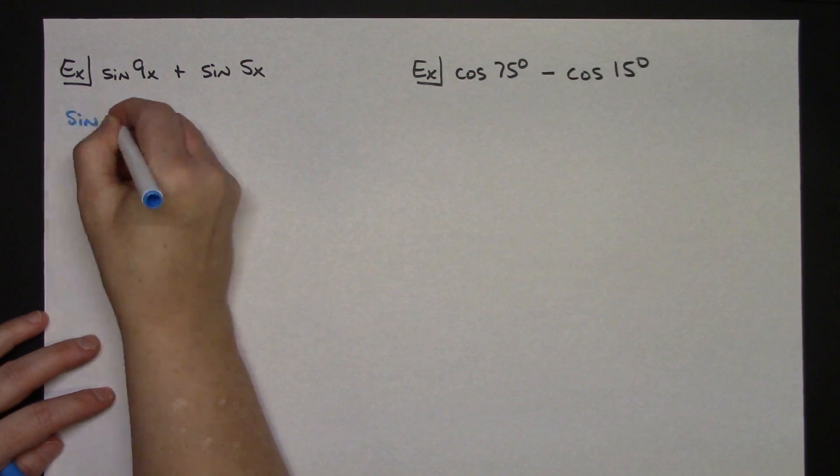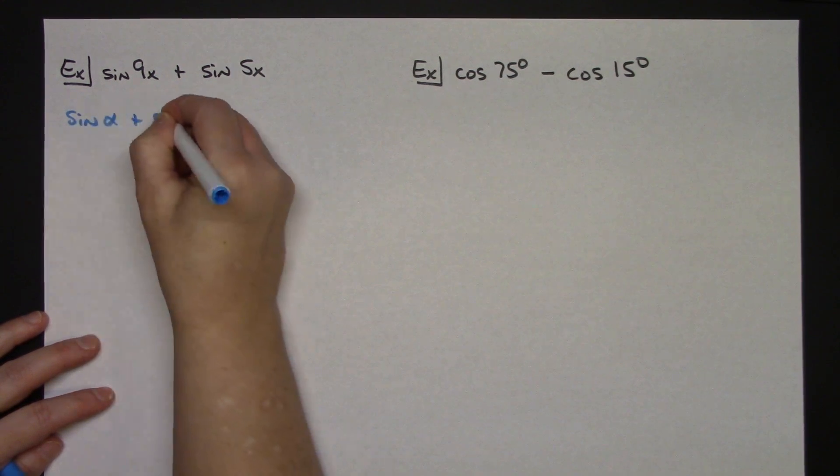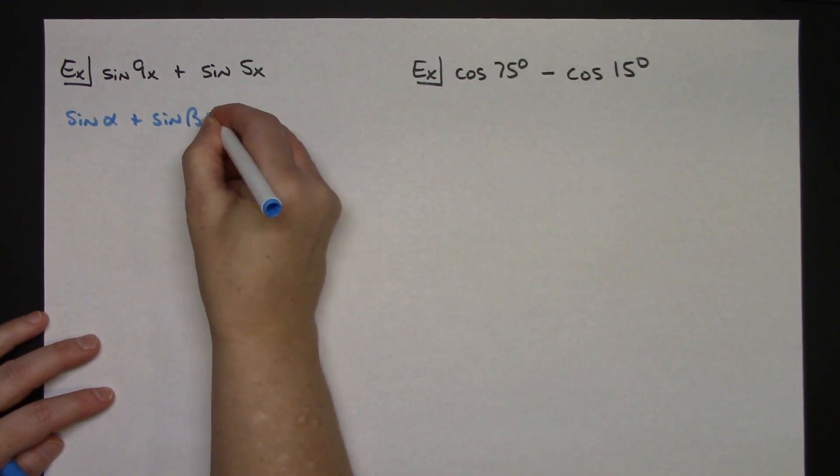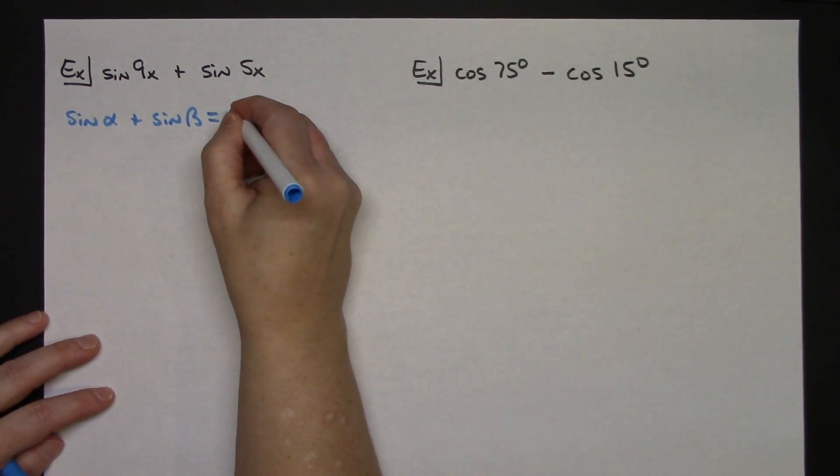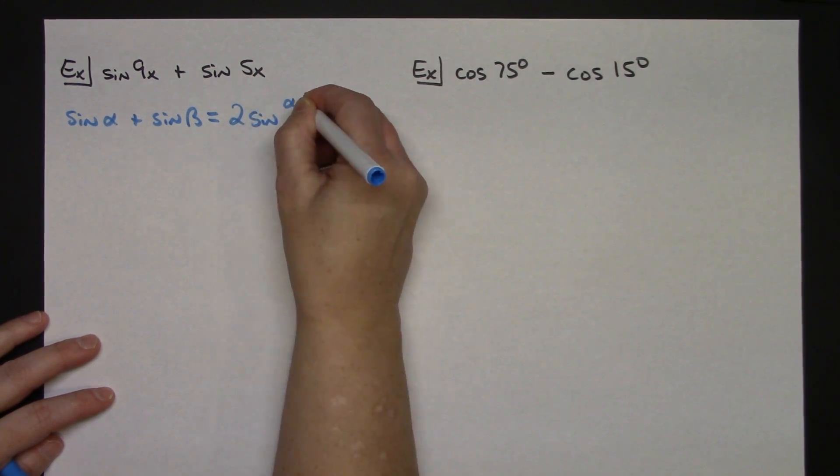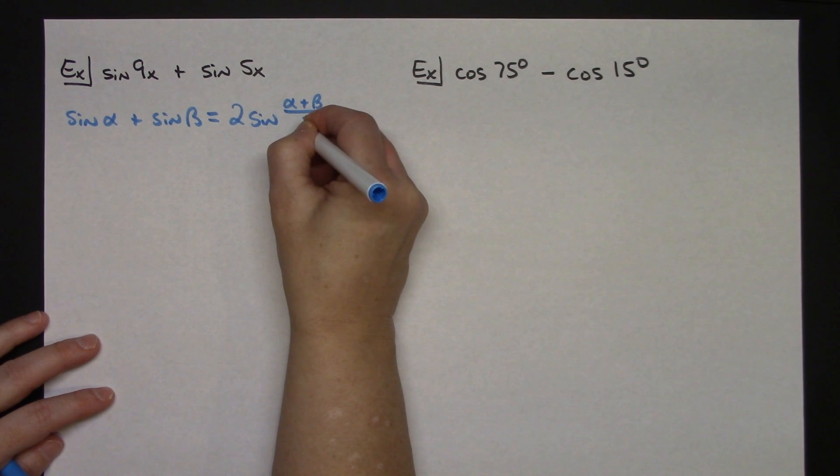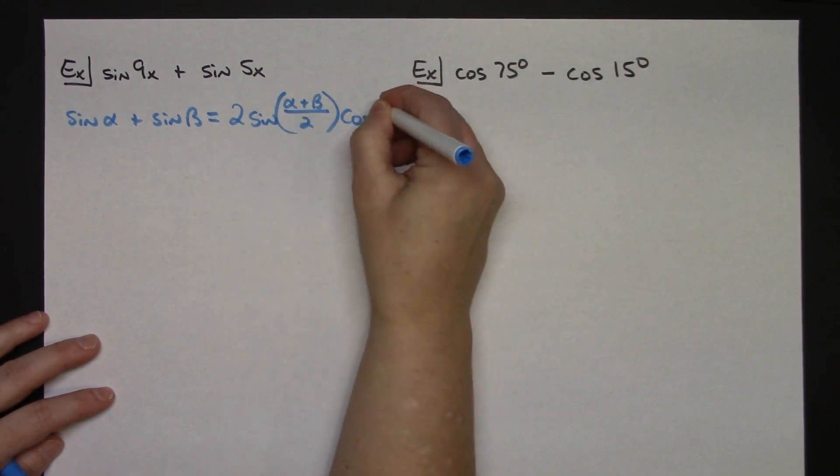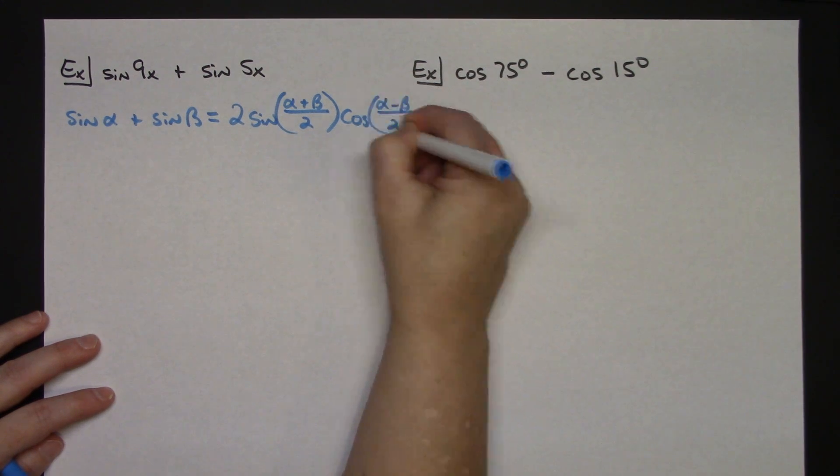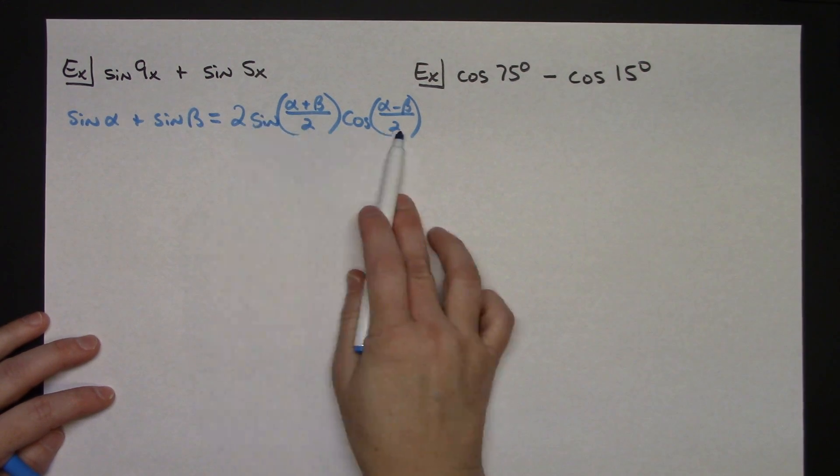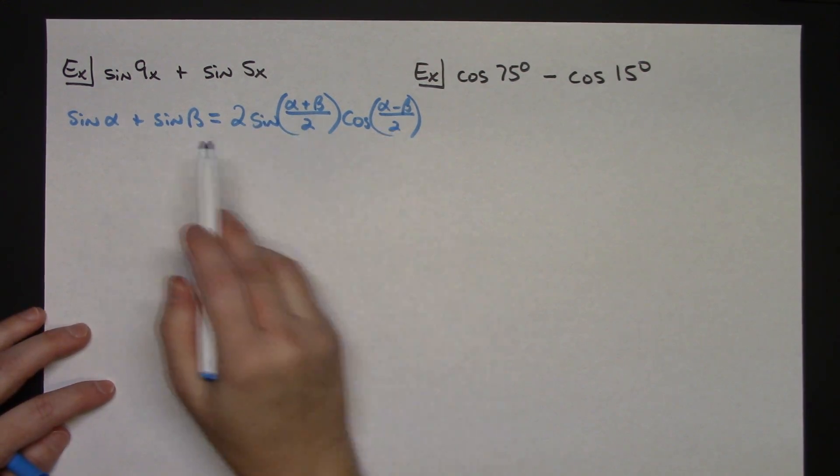So I'm going to rewrite the formula just so we have it for reference. Sine alpha plus sine beta, that's what I've got right there. That's going to be equal to two sine alpha plus beta all over two and then cosine alpha minus beta all over two.